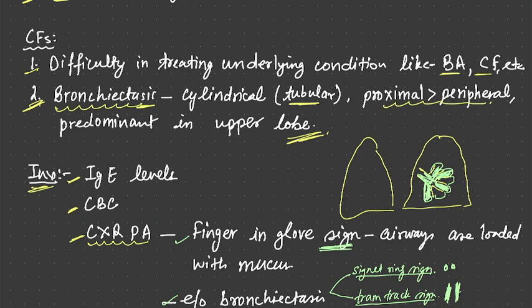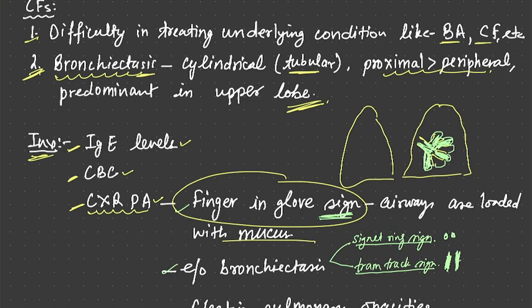The disease can present like bronchiectasis. Investigations: we do IgE levels, we do CBC, we do chest x-ray PA. Chest x-ray PA will show finger in glove sign and there can be evidence of bronchiectasis, that is signet ring sign and tram track sign.